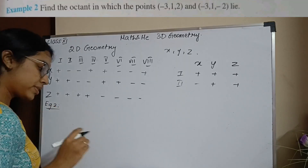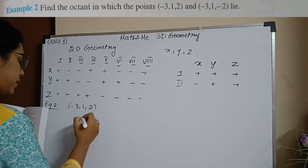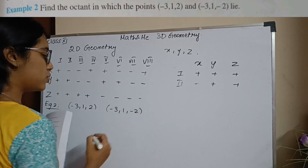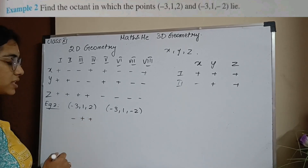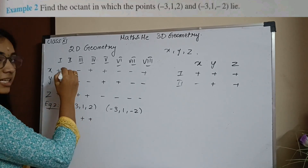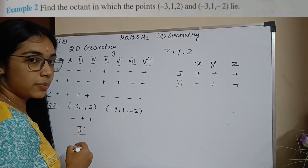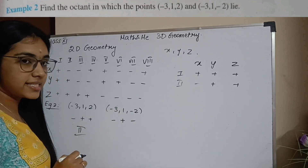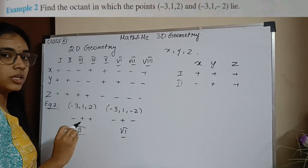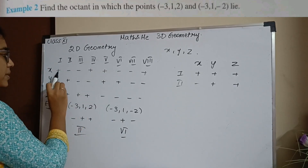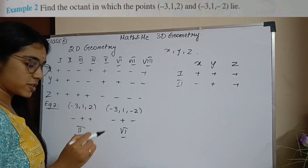Example 2: Find the octant in which the points (−3, 1, 2) and (−3, 1, −2) lie. For (−3, 1, 2): x is negative, y is positive, z is positive — that's (−, +, +), which is the second octant. For (−3, 1, −2): x is negative, y is positive, z is negative — that's (−, +, −), which is the sixth octant. Always remember the table pattern: for x: +, −, −, + repeating; for y: +, +, −, − repeating; for z: +,+,+,+ then −,−,−,−.